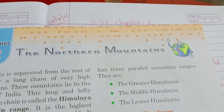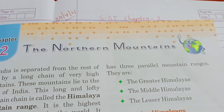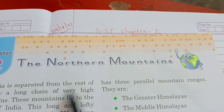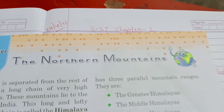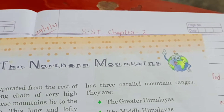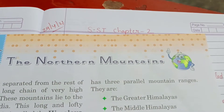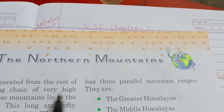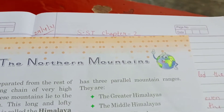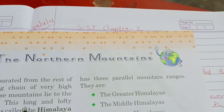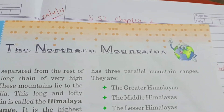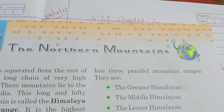India, Bharat, is separated from the rest of Asia by a long chain — ek jo badhi lambi chain hai — of very high mountains. These mountains lie to the north of India, and this long and lofty mountain range is what we are talking about.